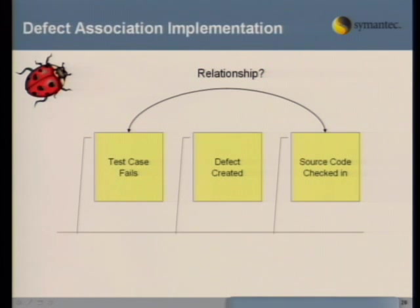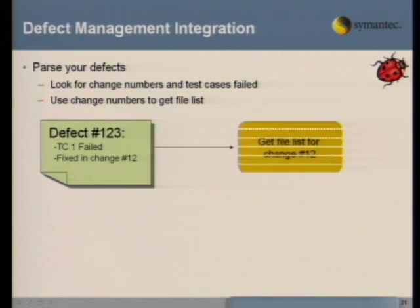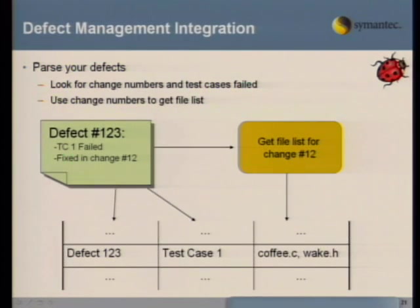For the defect association implementation: we're looking for test case and source code associations based on the defects that have been checked in. Parse your defects — very similar to requirements — and look for the change numbers and test cases that have failed. Assuming that information is in the comments or in some field associated with your defect, you can get the file list for that specific change and associate: this test case failed with these source code changes.